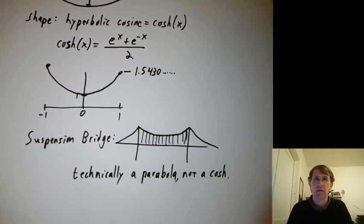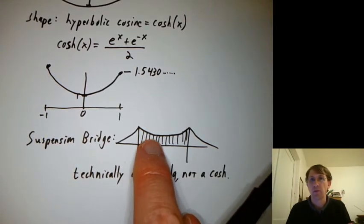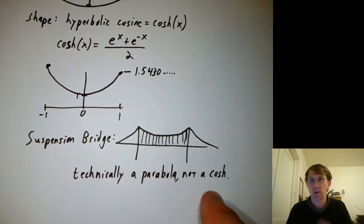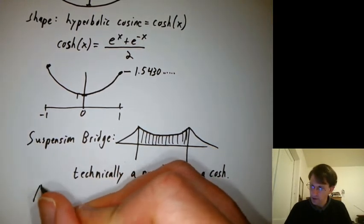So if the road deck is much heavier than the cable, then it's more parabola. If the cable is much heavier than the road deck, then it's more hyperbolic cosine. Let's ask about the arc length of cosh.